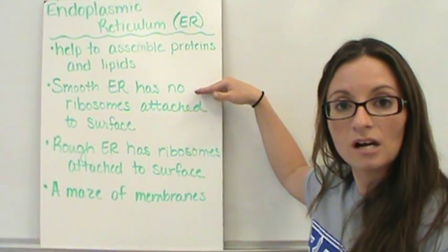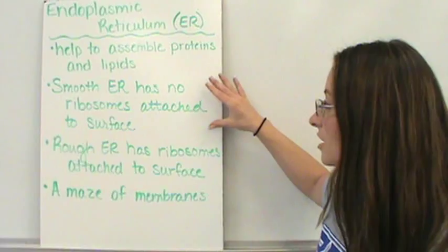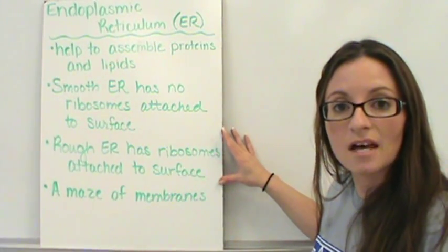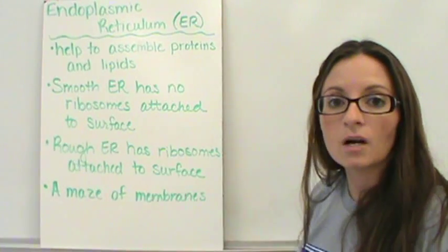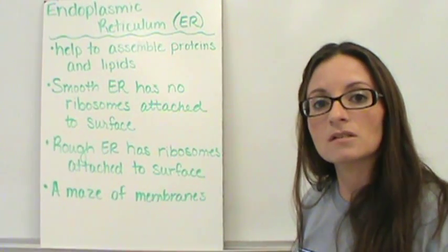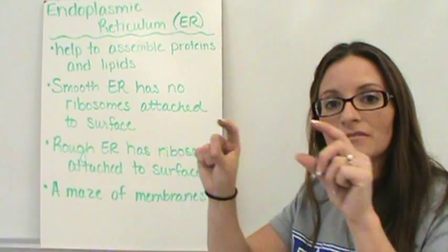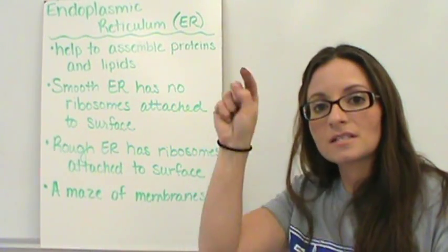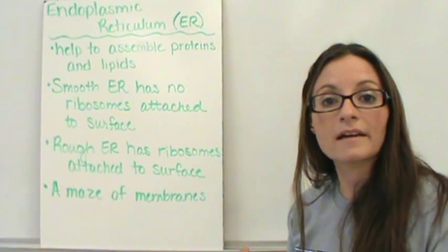It is called smooth ER if it has no ribosomes attached to it, and then it is called rough ER if it does have ribosomes attached to it. Now, when you look at it in the cell, what it is going to look like is this maze of flat membranes. So you are going to see all these flat membranes, but then you are going to see these maze-like structures that connect them.